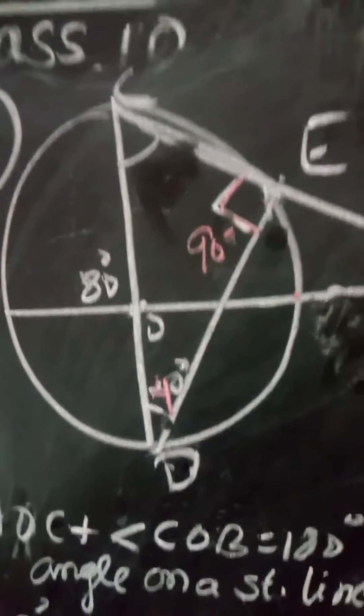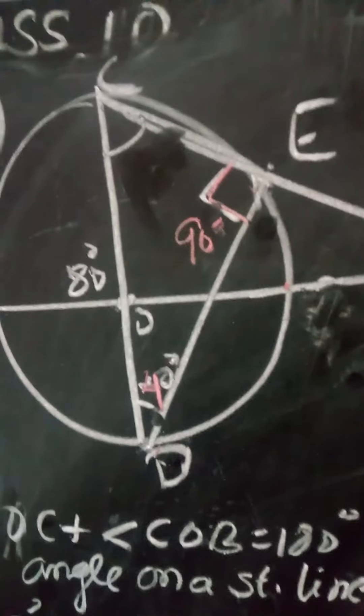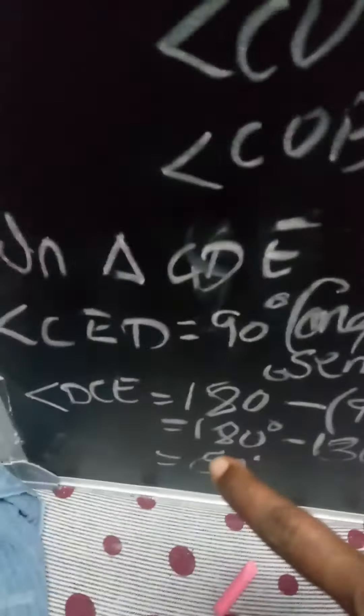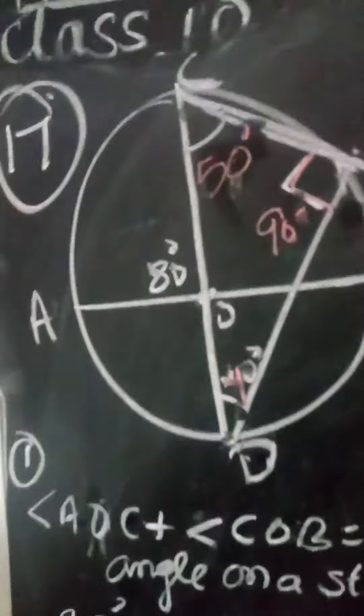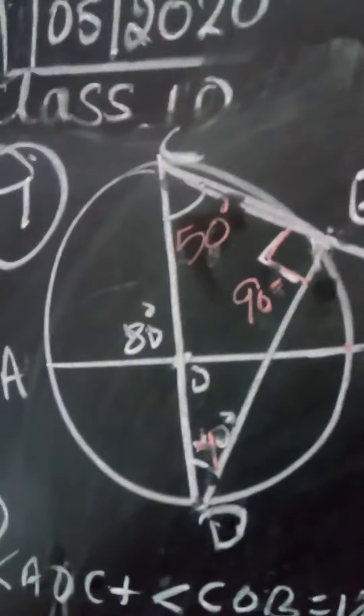180 minus 130 will be 50, so this angle is 50 degrees. In triangle CD, the angle CD is equal to 90 degrees — angle in the semicircle — and DC is equal to 180 minus 130, so I've got 50 degrees.